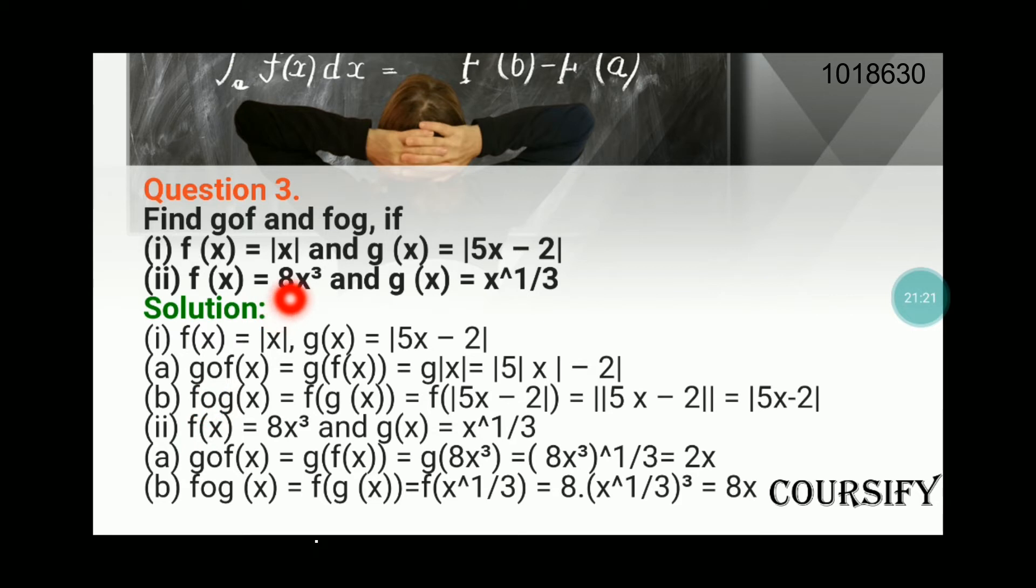This is g of f. Now for f of g, we first find g(x) which is |5x - 2|, and then we feed it to f. What does f do? Whatever value is fed into it, it takes the mod of this value. So it will be ||5x - 2||, which is nothing but |5x - 2|. These are the two functions we've got.